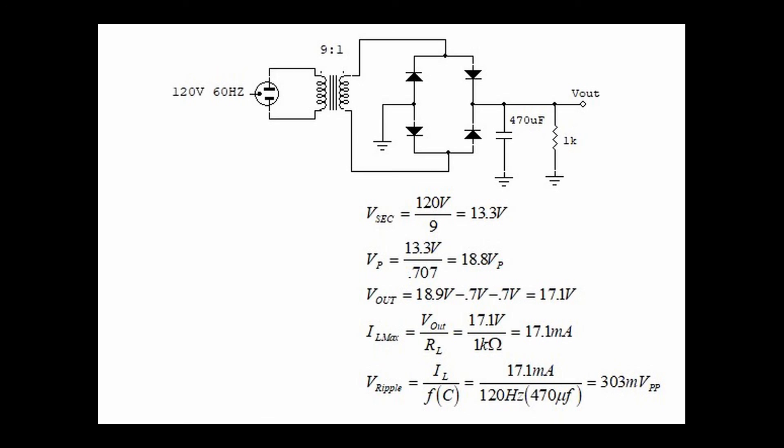So once again, with the bridge rectifier, we have higher voltage, more current, but the ripple voltage is less than the previous circuit, and that's because the capacitor is so much bigger. Thank you.